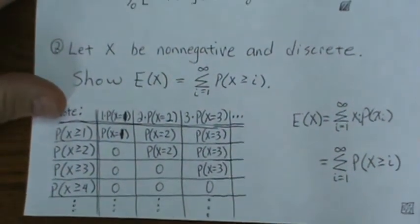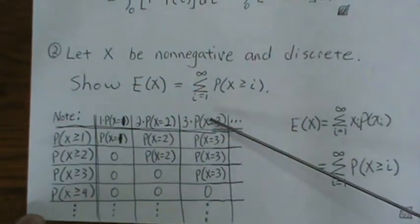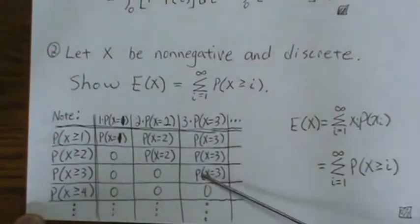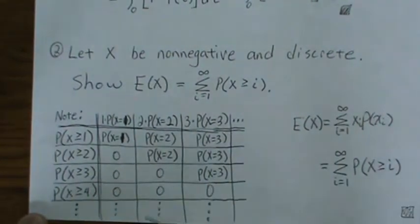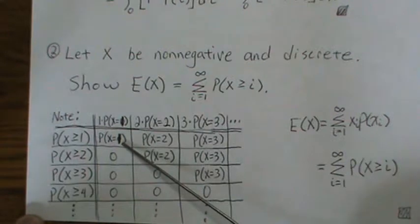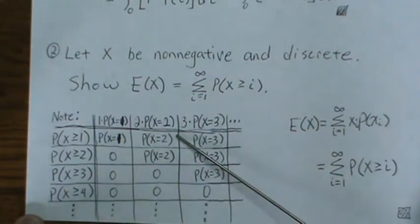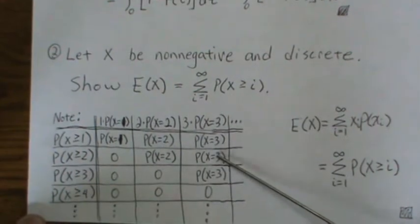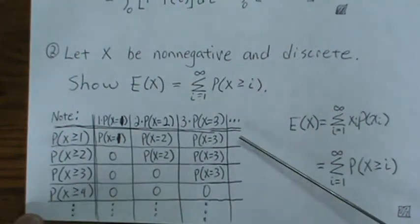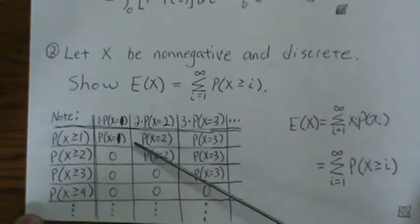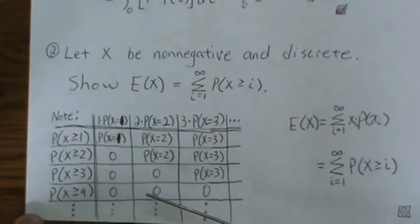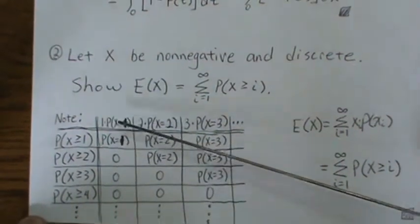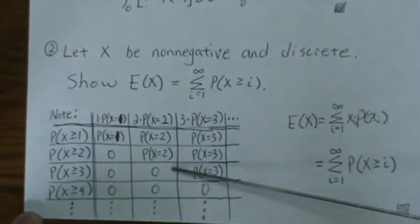We look at the middle piece — it's going to be an upper diagonal triangle, with zeros below. Here we put P(X=1) once, then P(X=2) twice, P(X=3) three times, P(X=4) four times, and the rest zeros. We want to add all these pieces up, and there are different ways we can do it — we could add them column by column: that gives 1 times P(X=1).